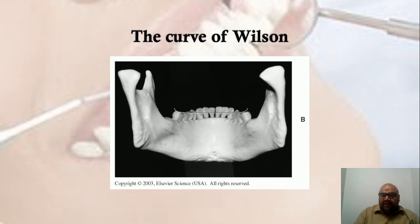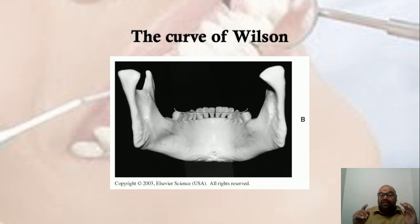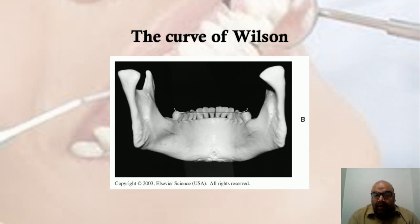The curve of Wilson is a curvature of specifically the posterior teeth. The lingual posterior teeth are not perpendicular to the horizontal or occlusal plane — they are actually tilted lingually. This 45-degree lingual tilt of the posterior teeth forms a curvature in the medial-lateral direction known as the curve of Wilson. It is formed by the lingual inclination of the mandibular posterior teeth.